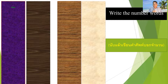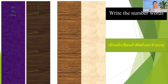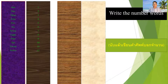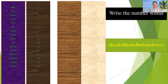You can see here — this is the word written and this is the number written. Number one is written as 'one.' So we have: one, two, three, four, five, six, seven, eight, nine, ten, eleven, twelve, thirteen, fourteen, fifteen, sixteen, seventeen, eighteen, nineteen, twenty.